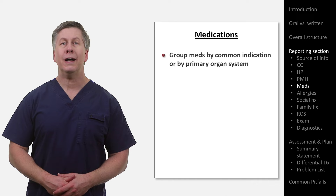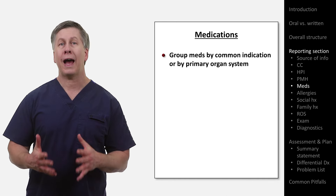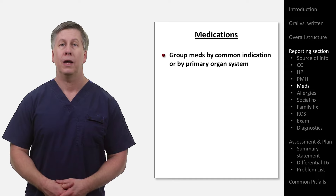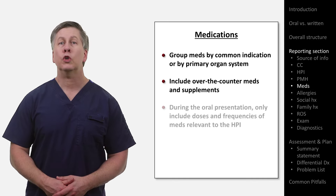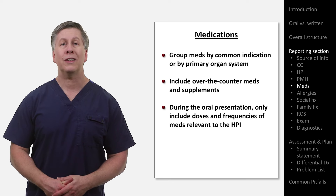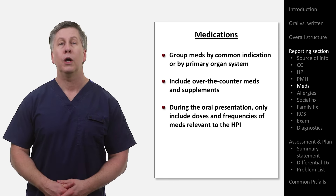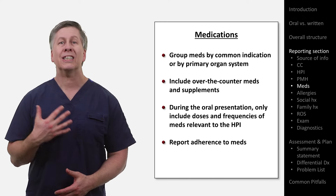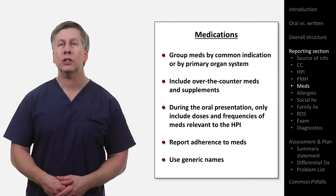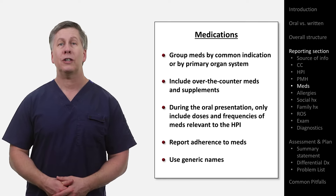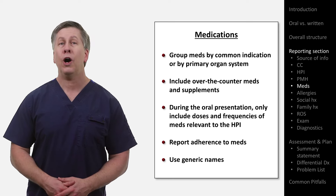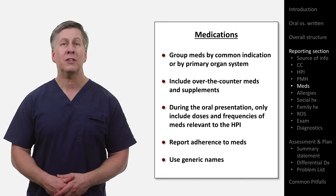Medications are straightforward. Group meds by common indication or by primary organ system on which they act — it makes it much easier for the audience to identify if a typically indicated medication class is missing. Include over-the-counter meds and any supplements the patient is taking. During the oral presentation, include doses and frequencies of just those meds that are relevant to the HPI, whereas in the written notes, include doses and frequencies of everything. Report patient adherence to meds. Always use generic names of meds — the generic medication suffix will help with identifying the medication class. For example, any drug ending in -olol is a beta blocker, and formal exams almost always use generic names.